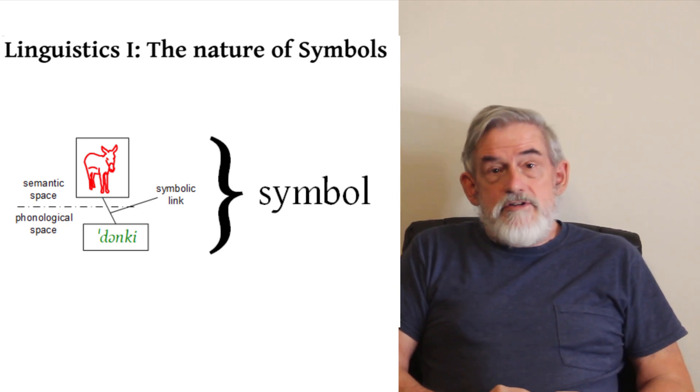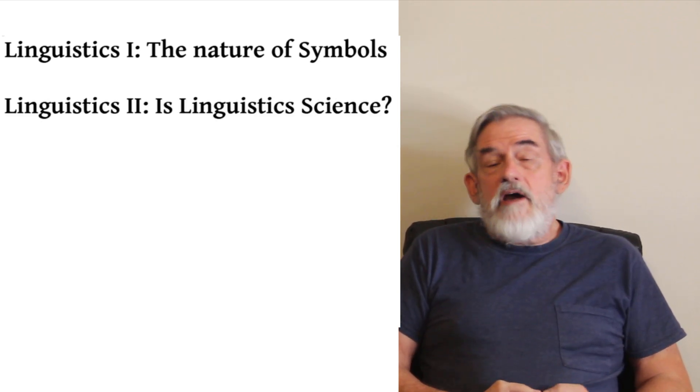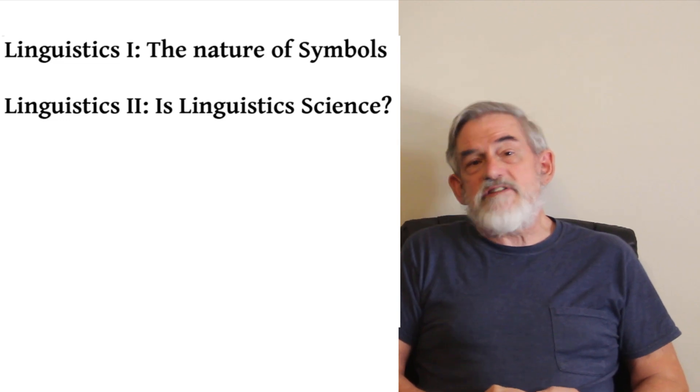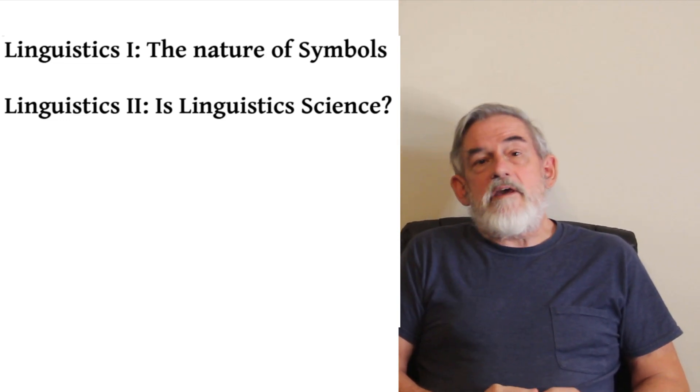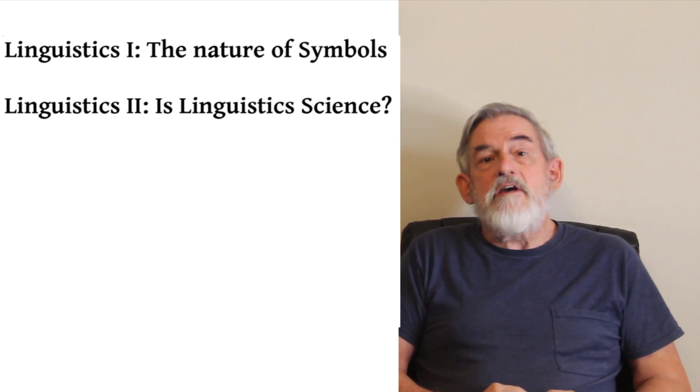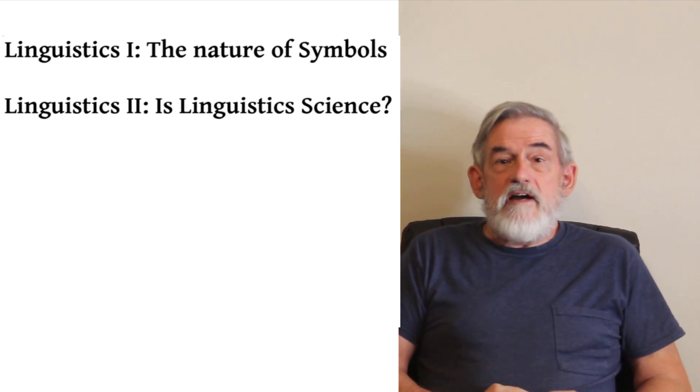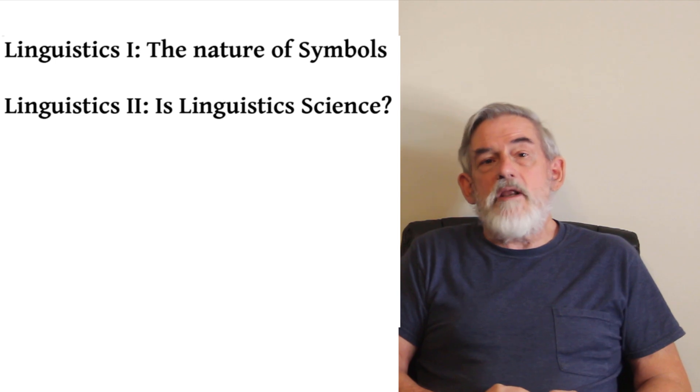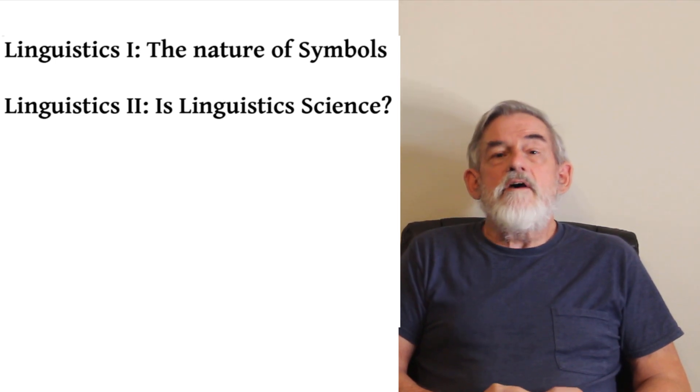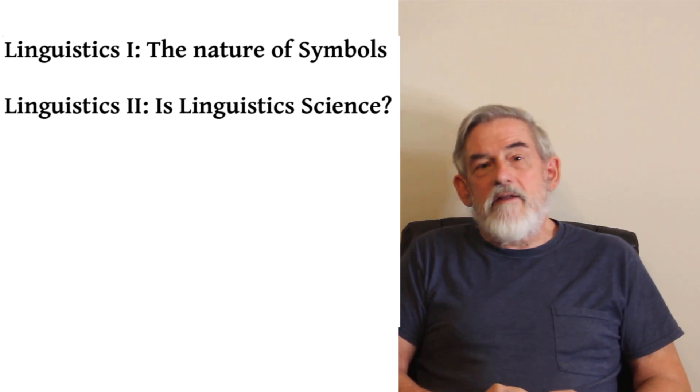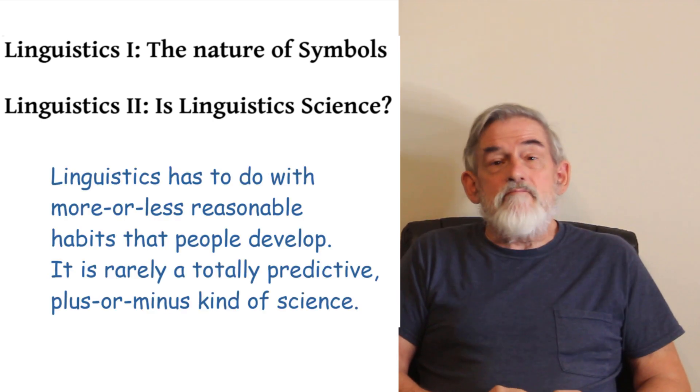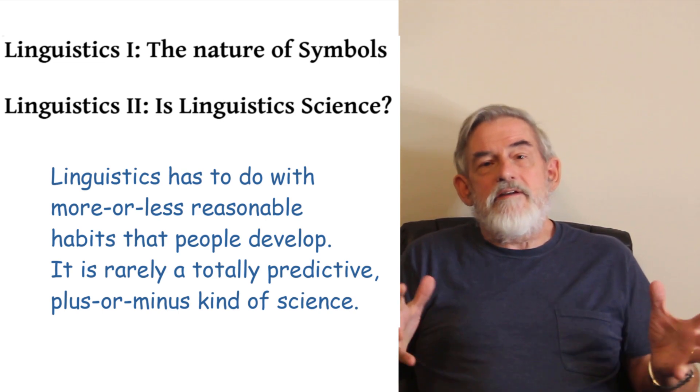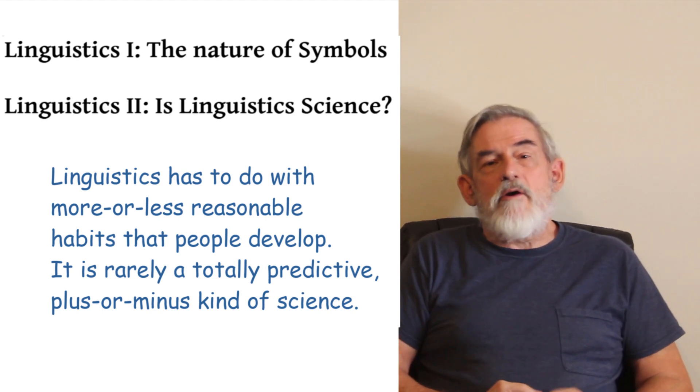Languages are made of symbols. The second video had to do with whether linguistics is a science, and the answer we came up with was that it depends on how you define science. If you require that for a science you have to make absolute plus or minus statements, you have to say things that are 100% predictions that cannot be any way other than the way that you said they're going to be, linguistics doesn't work that way. You leave out too much stuff that is not only interesting but of the very nature of language if you require that.